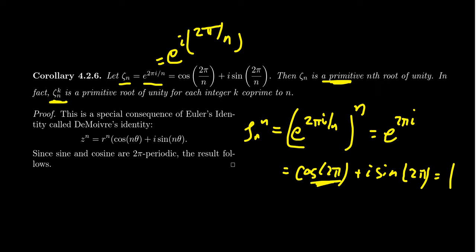If some of this went too fast, there are review videos available. In the top left you'll find a video on the complex plane and graphing complex numbers. Top right covers the modulus, argument, and polar form of a complex number. Bottom left provides the proof of Euler's identity and examples such as e to the πi equals negative 1. If you're ready to continue, click the link in the bottom right to reach the main point of this lecture: constructing cyclic groups inside C-star using roots of unity.